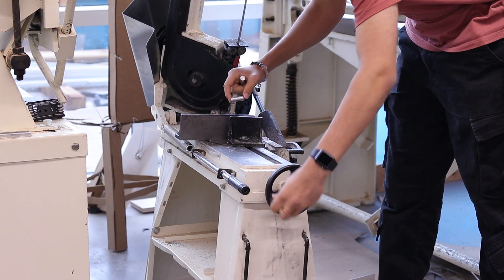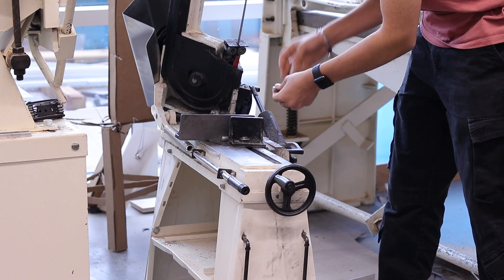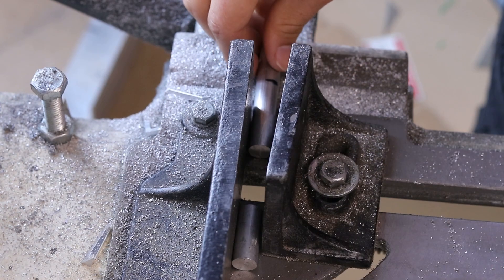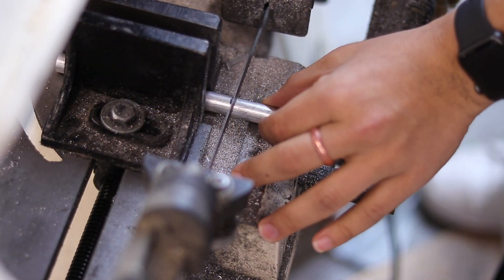We'll make this rough cut on the horizontal bandsaw. It's crucial that we ensure the stock is secured tightly, otherwise it'll break loose and spin with the blade. I'll use a smaller piece of the same diameter to secure everything evenly. I'll place the stock in the saw and line the blade up with my mark. Then I'll secure it.